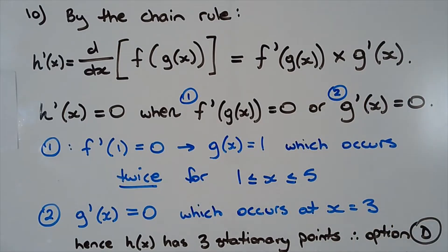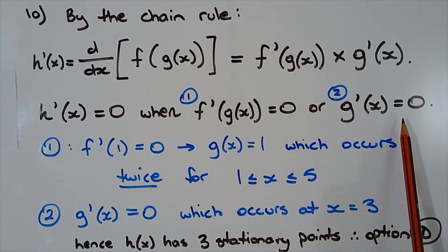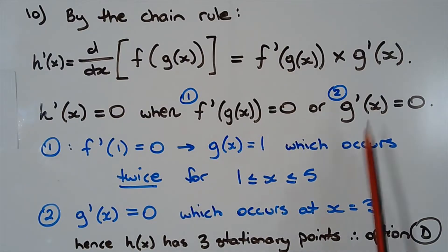Now to find the stationary points, we let h dash of x equals 0. That occurs when either f dash of g of x equals 0, or g dash of x equals 0. Either one of those two has to equal 0, so we'll consider both cases, case 1 and case 2.